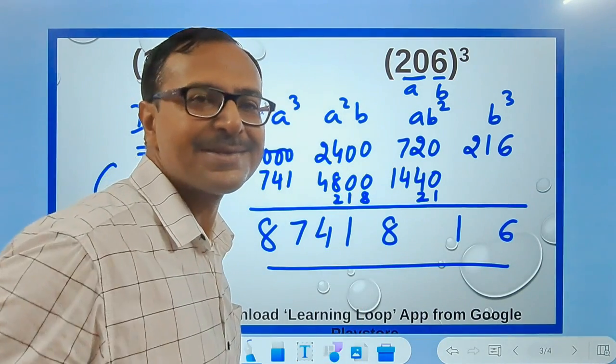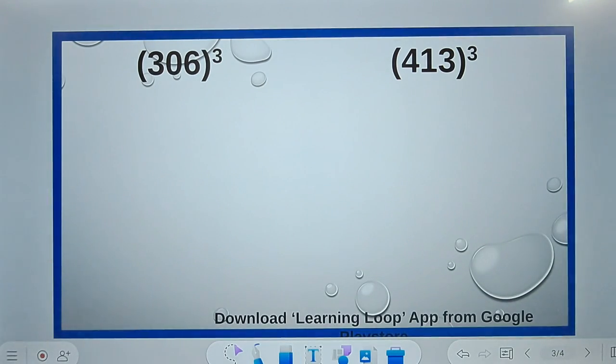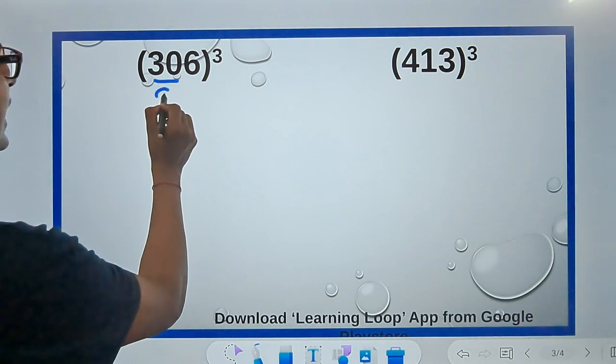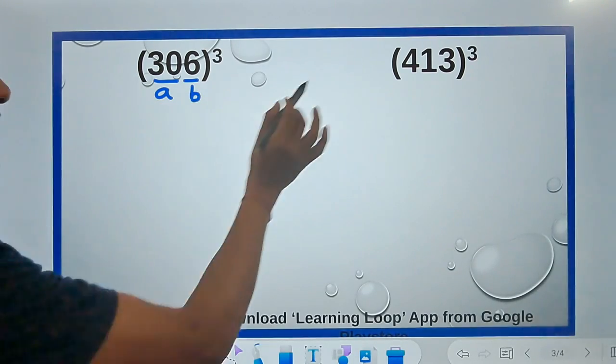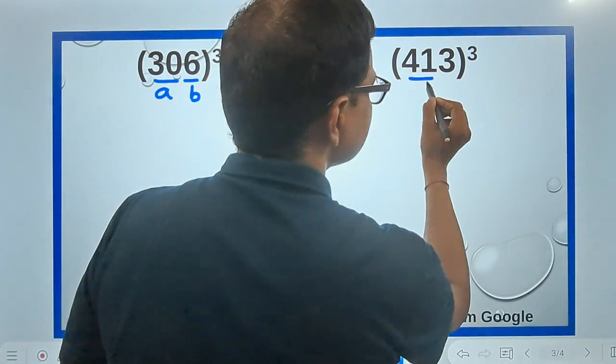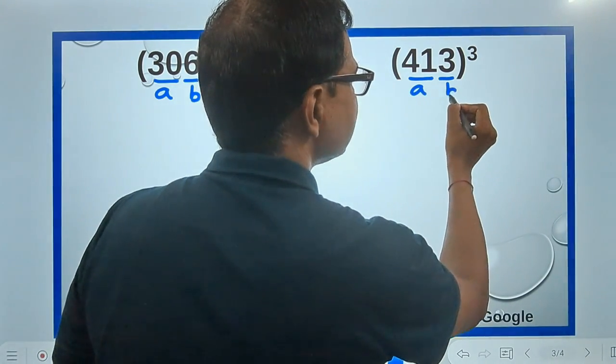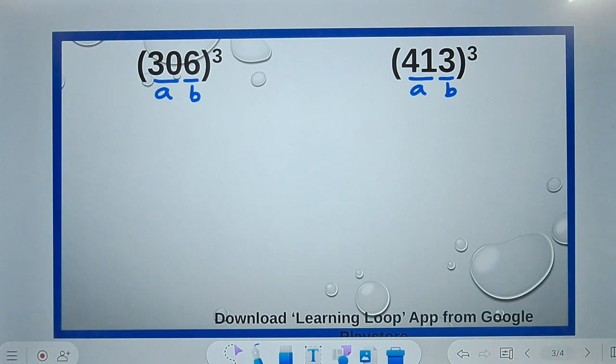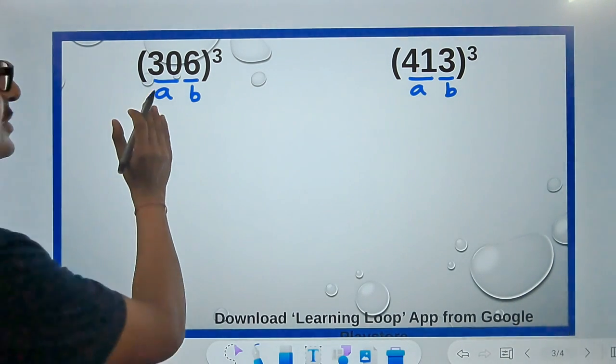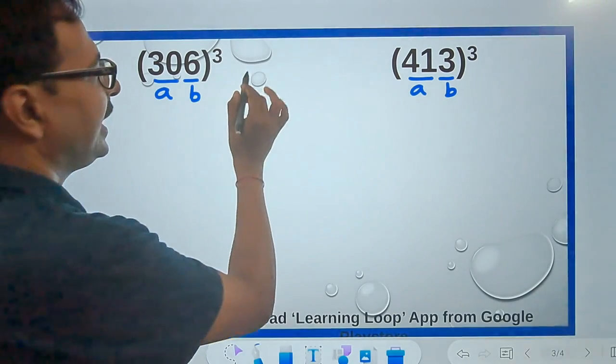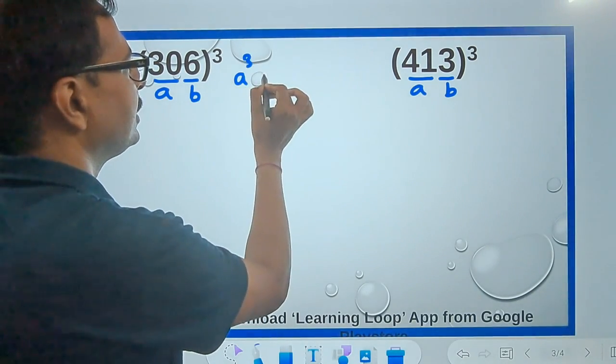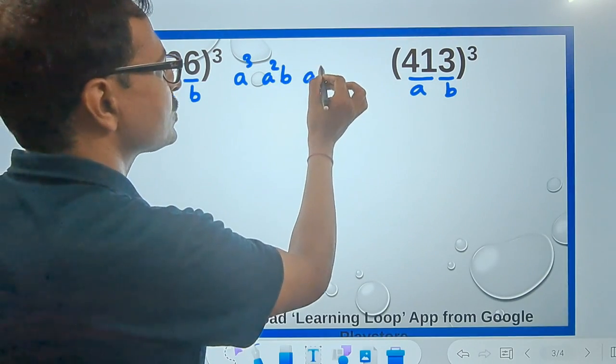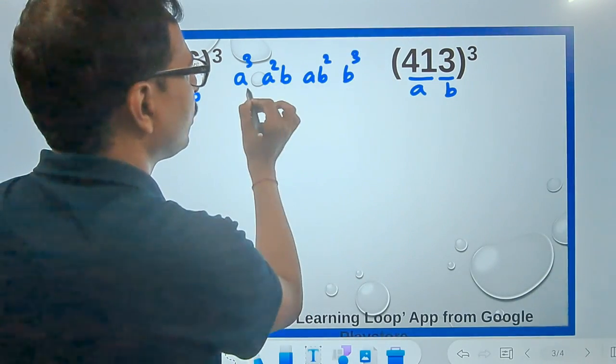Here we have 306³ and 413³. How do you find the cube of 306? You have to consider this 30 as a and this 6 as b. Likewise in 413, you have to consider 41 as a and 3 as b. Whenever you have to find a cube of three-digit numbers, you split it into two parts and then write four numbers: a³, a²b, ab², and b³.